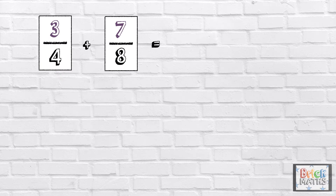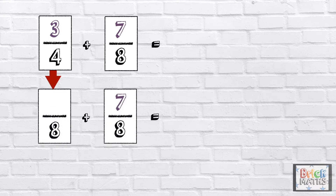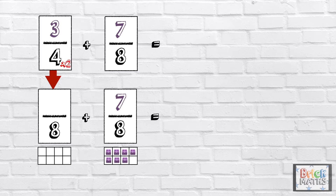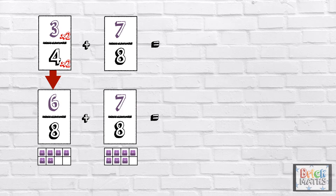So we need to find an equivalent fraction for 3 quarters with 8 as its denominator. We multiply 4 by 2 to get 8, so we need to multiply the numerator by 2 as well, which is 6. So 3 quarters is the same as 6 eighths.